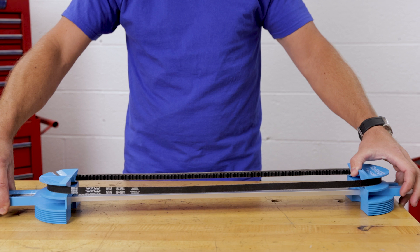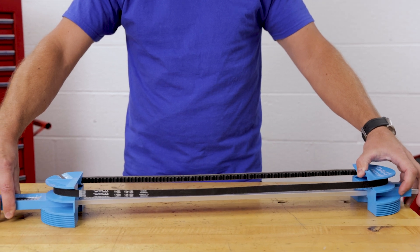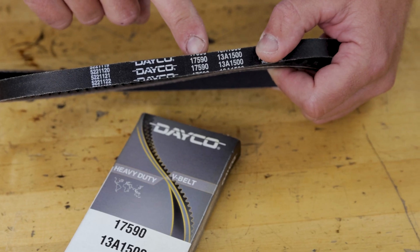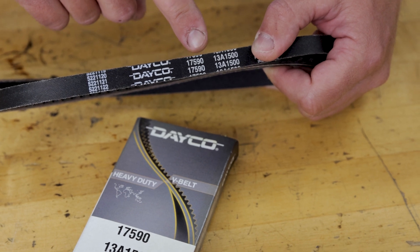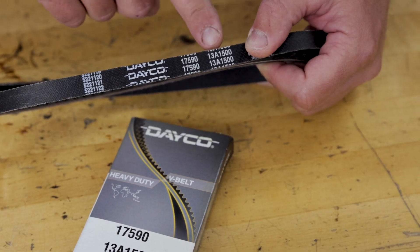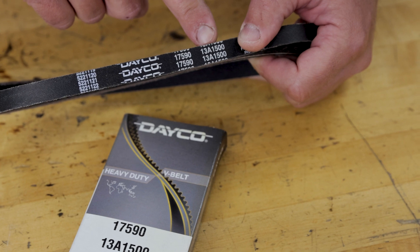You now have circumference measurements for your v-belt. These numbers align with the belt's standard number, 17590, and its metric part number, which is 13A1500.